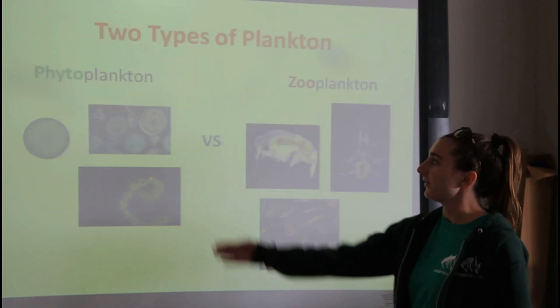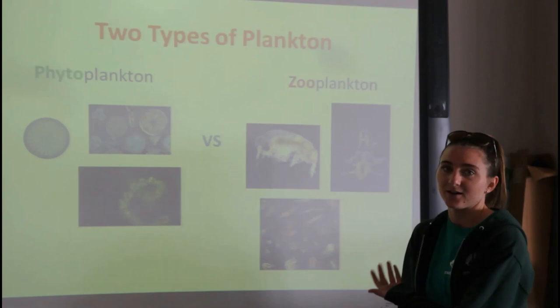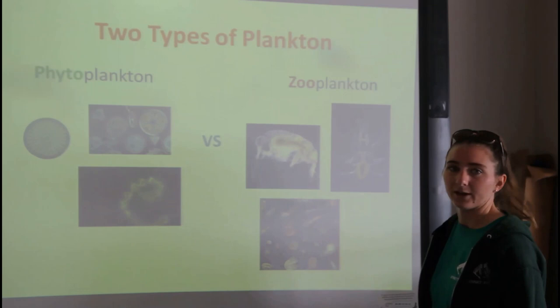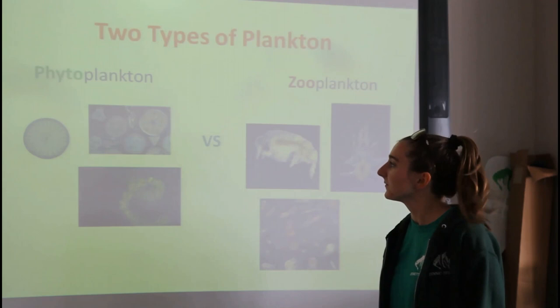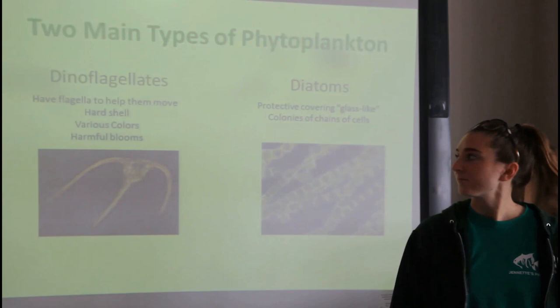We have two main types of plankton: phytoplankton and zooplankton. Most people recognize the word 'zoo' because you see lots of animals at the zoo — that's exactly what zooplankton is, our animal plankton. You can see they do resemble animals, kind of like bugs. Phytoplankton is the opposite — they're plants. Every time you see a geometric shape like a circle, triangles, or any lines, those are typically our plant plankton.